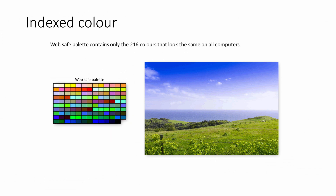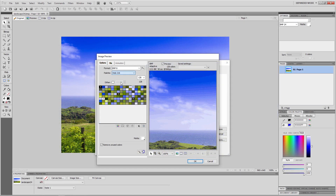Another type of indexed colour palette includes only 216 web-safe colours. Although 8 bits allows for up to 256 different colours, only 216 of them are likely to look the same in any browser on most computer screens. Saving an image with a web-safe palette will help to ensure consistency of appearance.